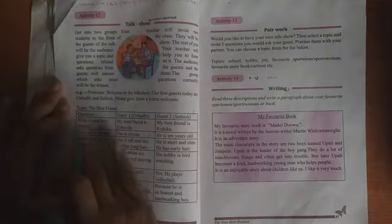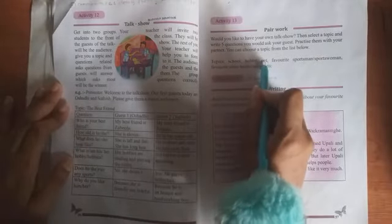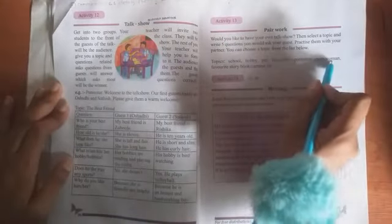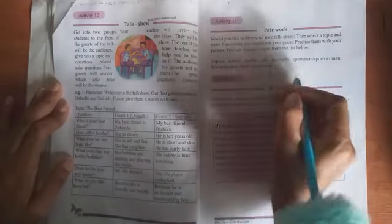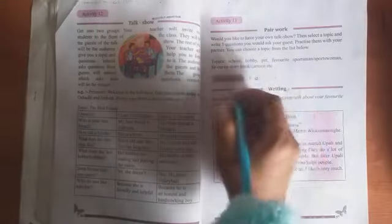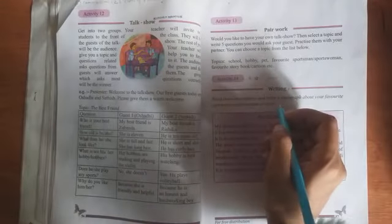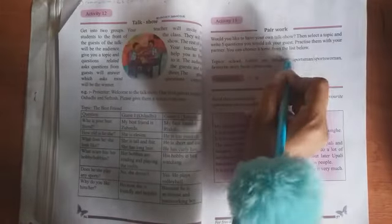You have to write the topic and write five questions. Topics include school, hobby, pet, favorite sportsman or sportswoman, favorite storybook or cartoon. So what you have to do is write the topic first, and you have to make some questions to ask about this topic.